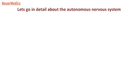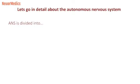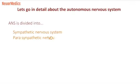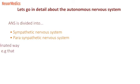Let's go into detail about the autonomic nervous system. It is further divided into two parts: the sympathetic nervous system and the parasympathetic nervous system. When you are sitting comfortably, there is some sympathetic activity and some parasympathetic activity in your body. If you go under stress, sympathetic activity will go up. If you are very comfortable, parasympathetic activity will dominate in your body.